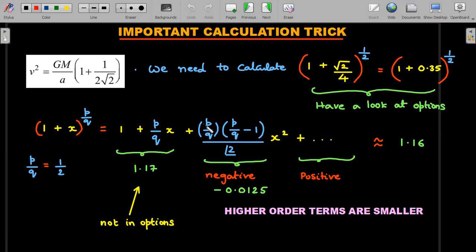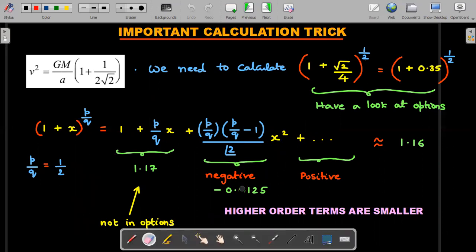So, sorry, 0.125 minus one by eight. So minus 0.125 multiplied by x square, which is 0.35 whole square. So that number, since it is a negative value, is going to reduce the answer.